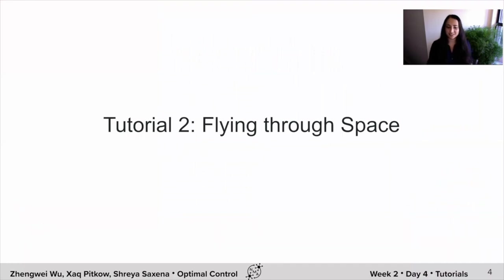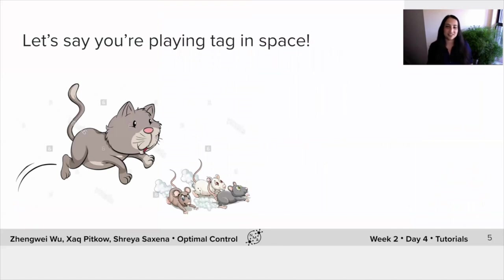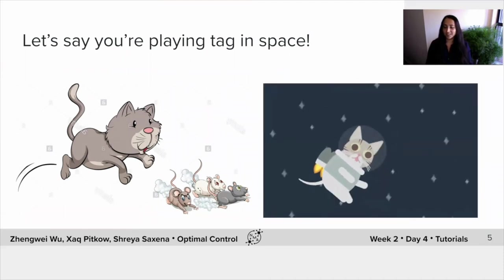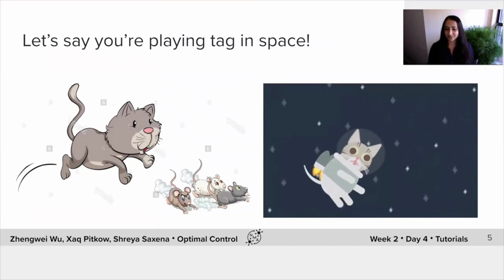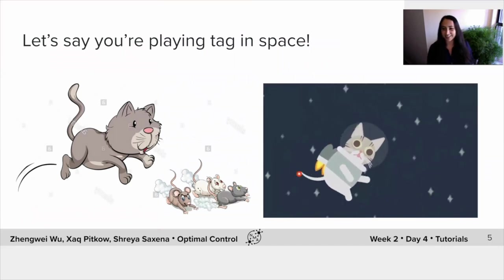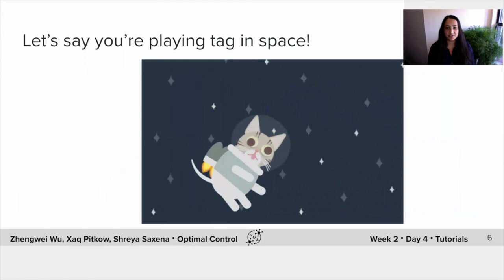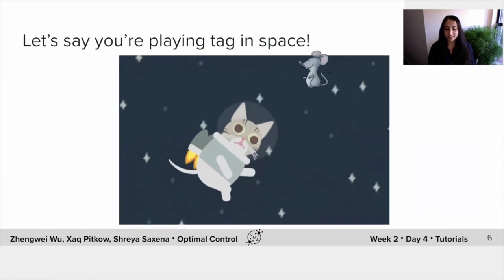This tutorial is about flying through space. Let's imagine that we're playing tag in space. You are the cat here playing tag with these mice and you're in space. In order to get from one position to the other, it's good that you have this handy little jetpack to zip you around. So let's get on the same page with some of the nomenclature. So here we're trying to catch a mouse and we're flying through space in order to do that. The mouse here we'll call the goal.